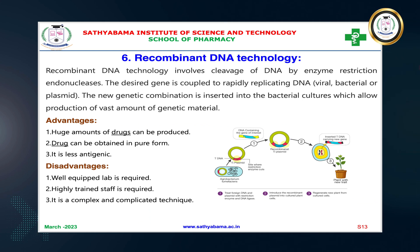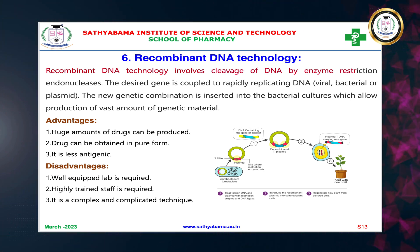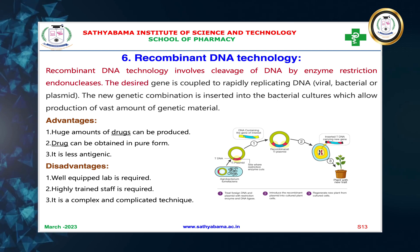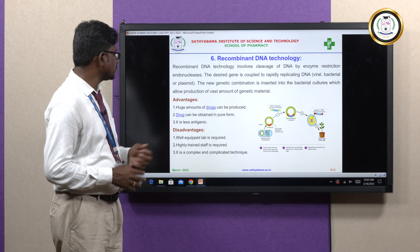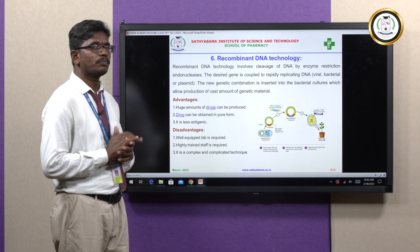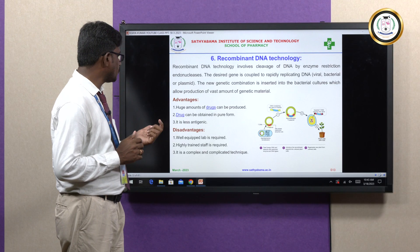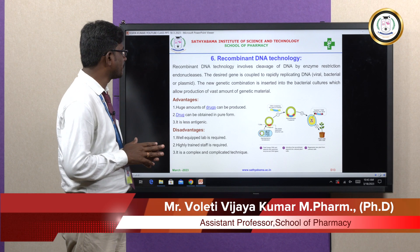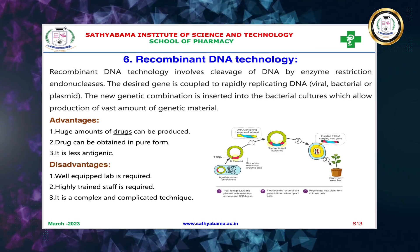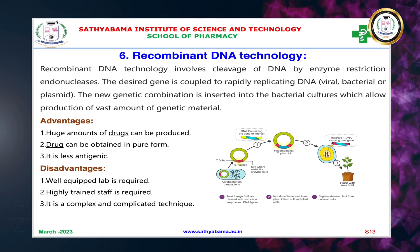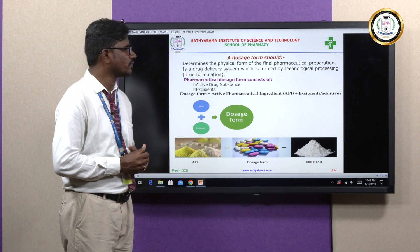Recombinant DNA technology involves changes in DNA by the enzyme restriction endonuclease. The desired gene is coupled to rapidly replicating DNA — viral, bacterial, or plasmid. Advantages: a huge amount of drugs can be produced, drugs can be obtained in pure form, and it is less antigenic in nature. Disadvantages: a well-equipped lab is required, highly trained staff is required, and it is a complex and complicated technique. That covers the various sources of drugs — plants, animals, and all those things.